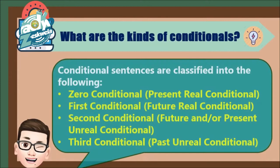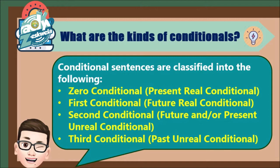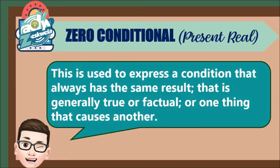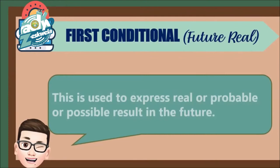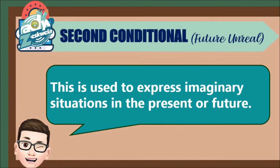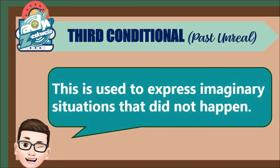What are the basic kinds of conditionals? We have zero conditional, first conditional, second conditional, and lastly, third conditional. Zero conditional is used to express a condition that always has the same result — that is generally true or factual, or one thing that causes another. First conditional is used to express real, probable, or possible results in the future. The second conditional is used to express imaginary situations in the present or future. And lastly, third conditional is used to express imaginary situations that did not happen.